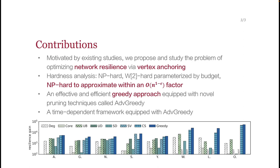We further propose a framework equipped with ADV Greedy, which first applies branch-and-bound searching to obtain a high-quality solution quickly, and then continues exploring promising spaces to produce better answers.